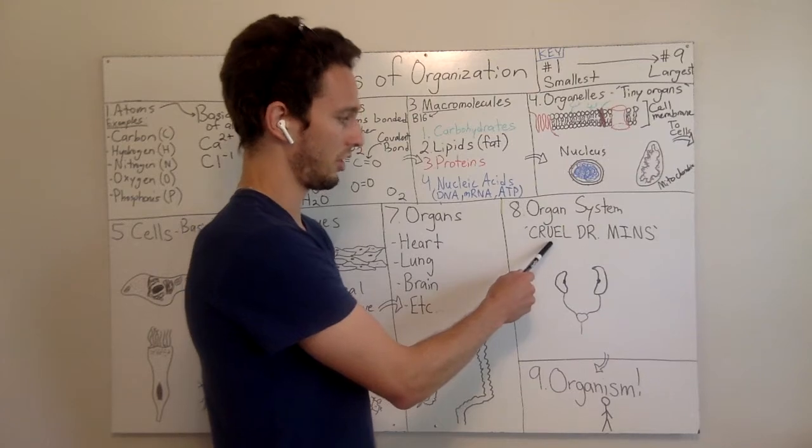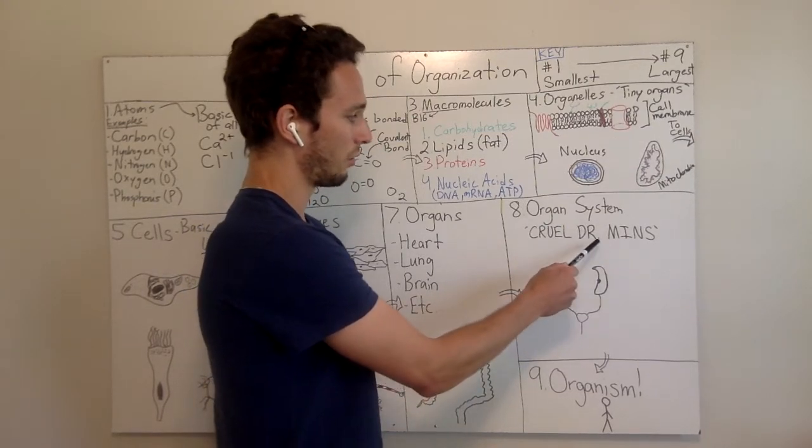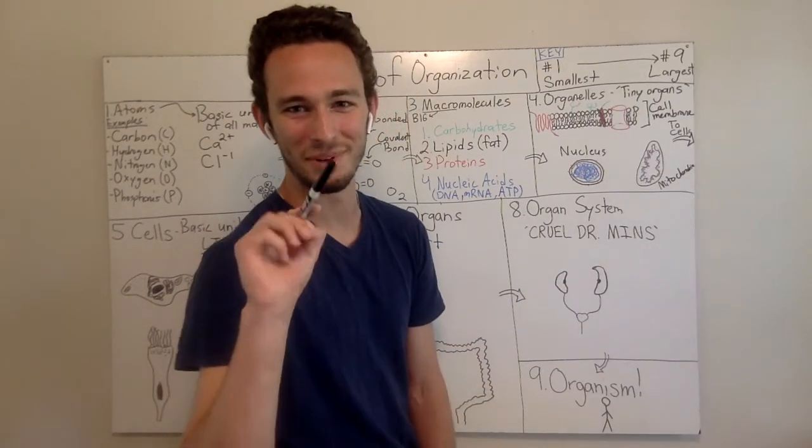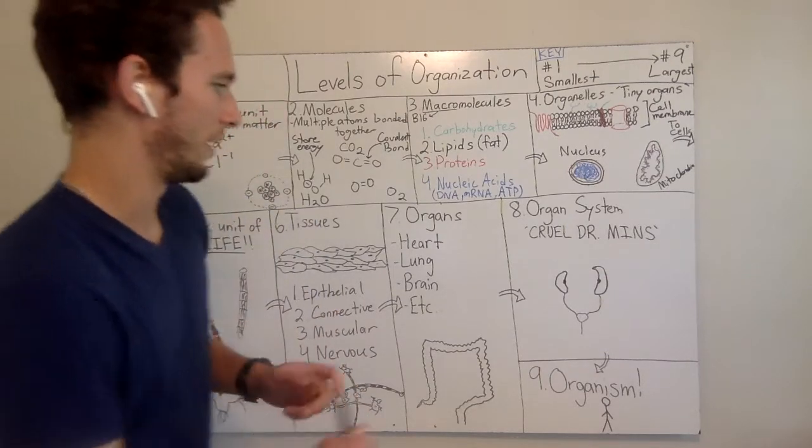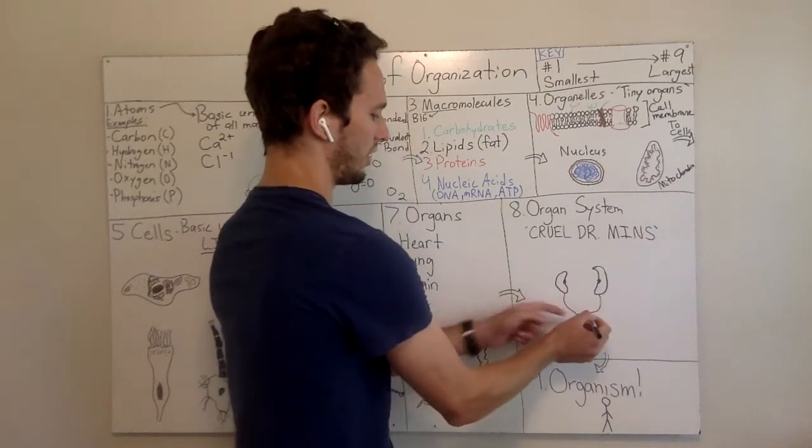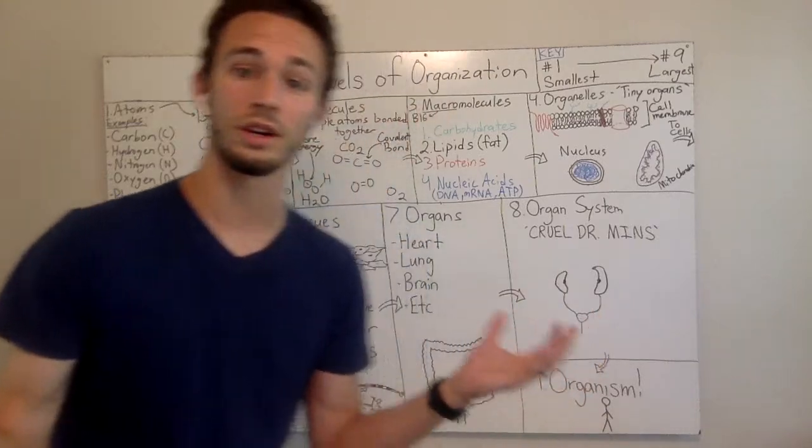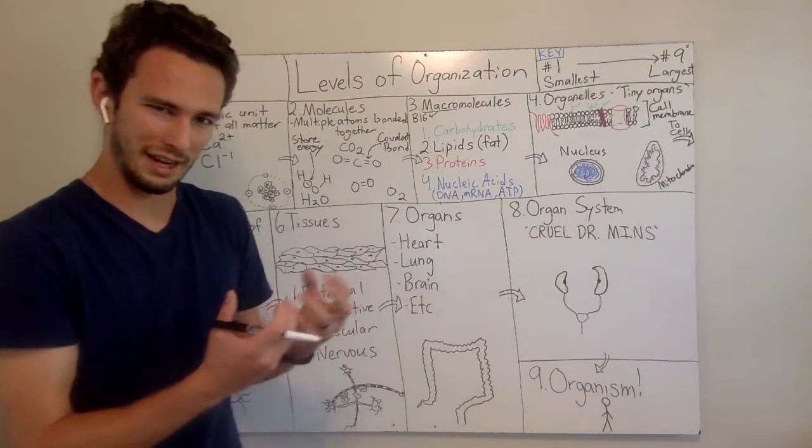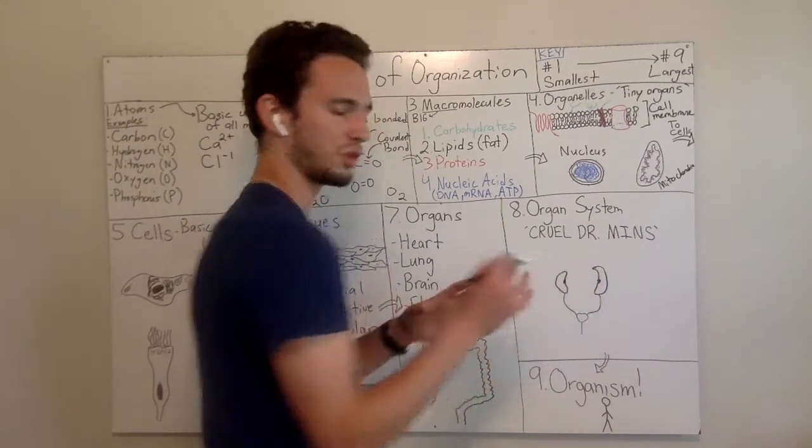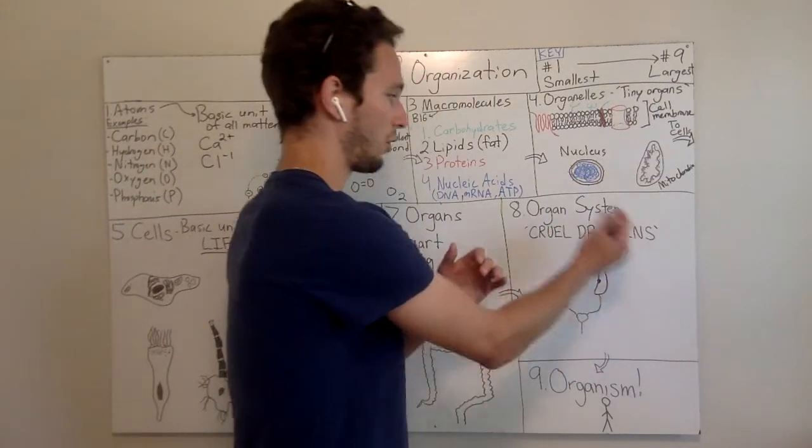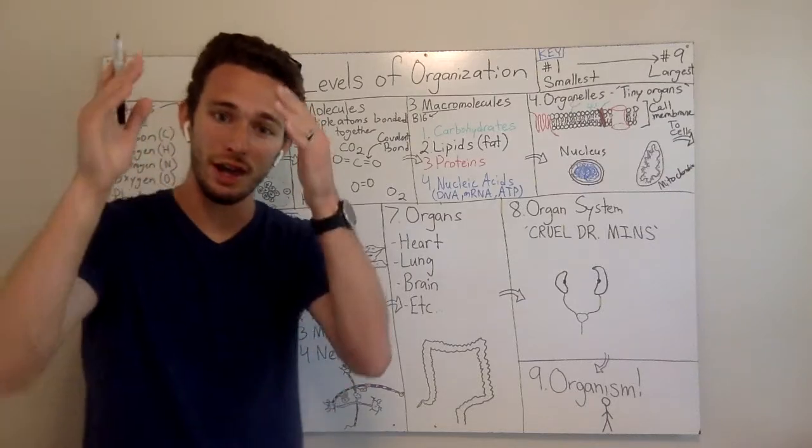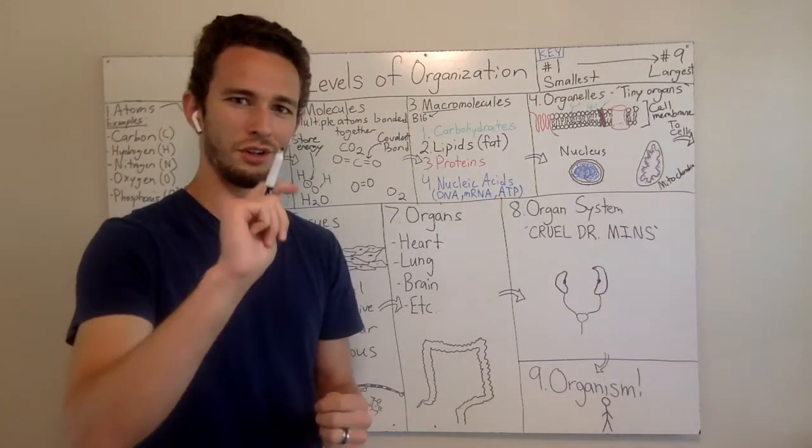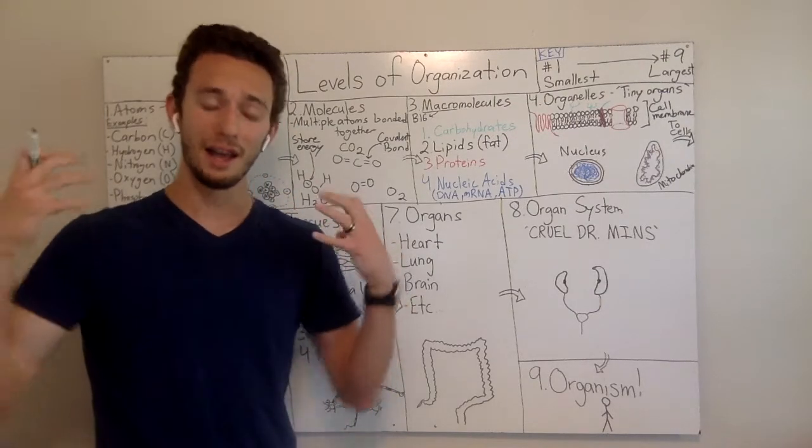Cruel Dr. Minz stands for every single organ system in the human body. Cardiovascular, reproductive, urinary, endocrine, lymphatic, digestive, respiratory, muscular, integumentary, nervous, and drop in the comments what S is. I drew the urinary system. These are your kidneys connected by ureters to the urinary bladder and then urethra. The goal of these organs working together in a system is to basically pee out the waste you don't need and reabsorb in the kidney what you would like to hold on to. In order for an organism to survive, you need a bunch of organ systems working together properly to maintain what's called homeostasis, a stable set of internal conditions.